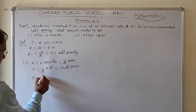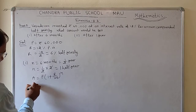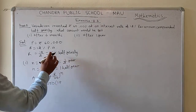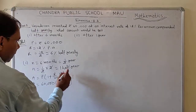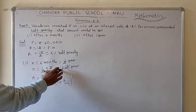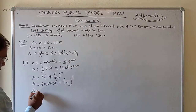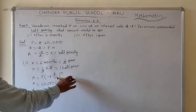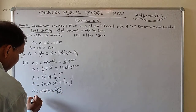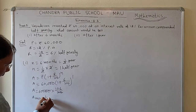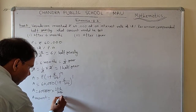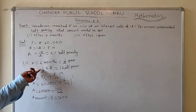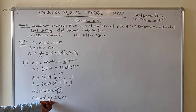Using the formula A = P(1 + R/100)^N, we get A = 60,000 × (1 + 6/100)^1 = 60,000 × (106/100). The zeros cancel out, giving A = 60 × 106 = ₹63,600. So the amount after 6 months is ₹63,600.